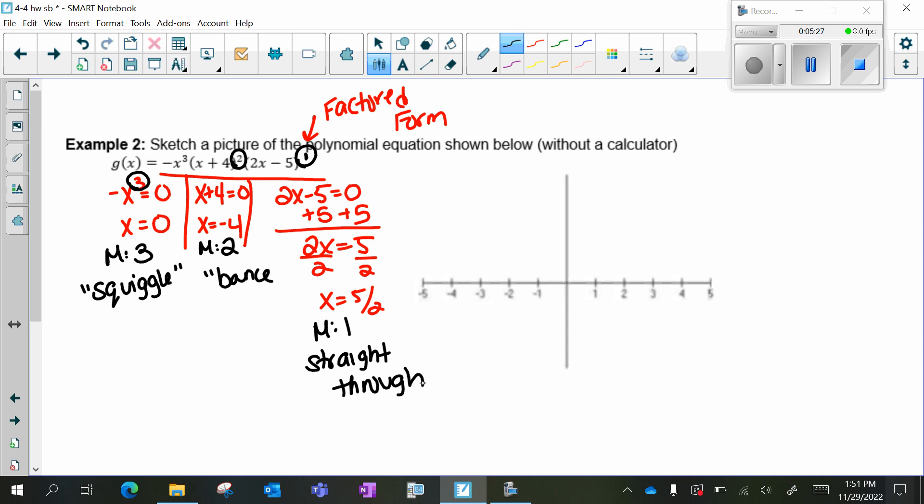I'm going to take each of my zeros and plot them on the x-axis. Then we need to know the overall behavior. My multiplicities are three, two, and one. That's how I find my degree. You add your multiplicities or you add your exponents. So this is a degree of six.